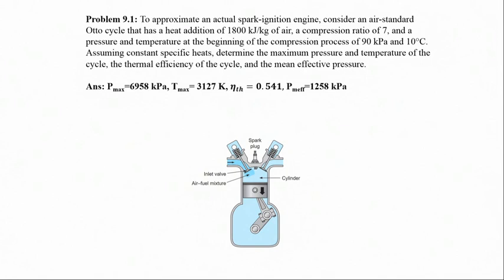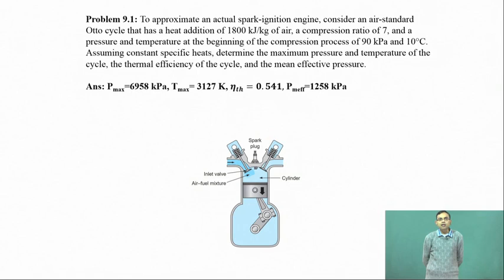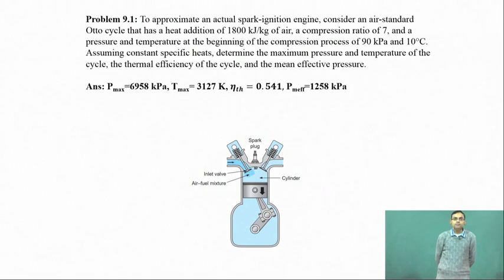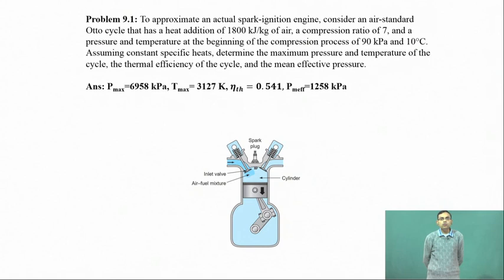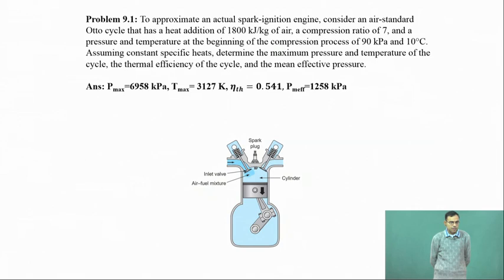The first problem is problem 9.1. To approximate an actual spark ignition engine, consider an air standard Otto cycle that has heat addition of 1800 kJ per kg of air and a compression ratio of 7, and pressure and temperature at the beginning of the compression process of 90 kPa and 10 degrees centigrade. Determine the maximum pressure and temperature of the cycle, the thermal efficiency, and the mean effective pressure — a new term we will define as we go forward.